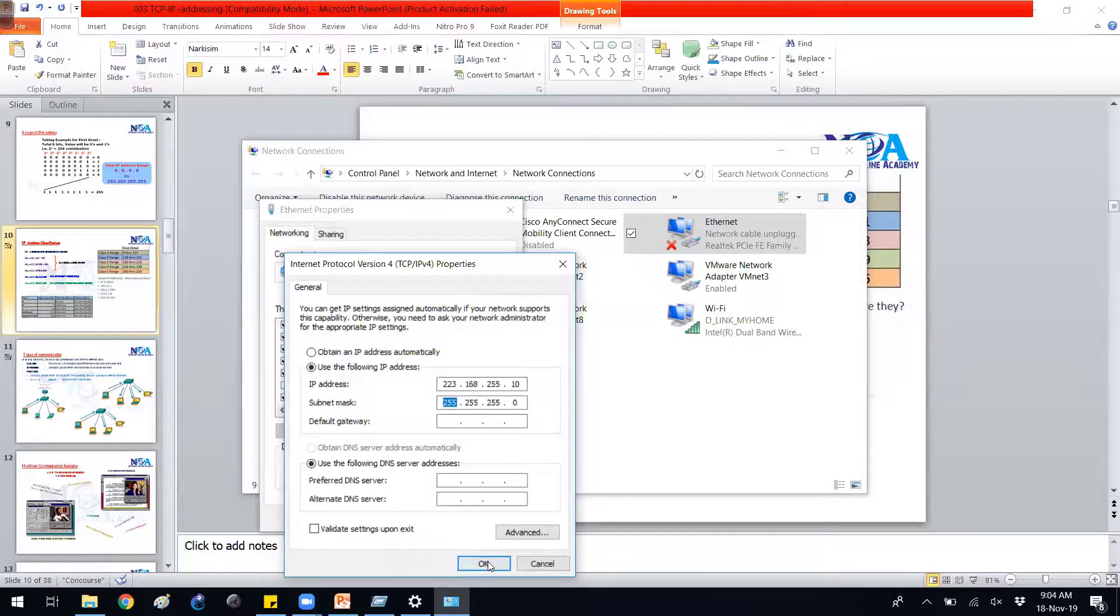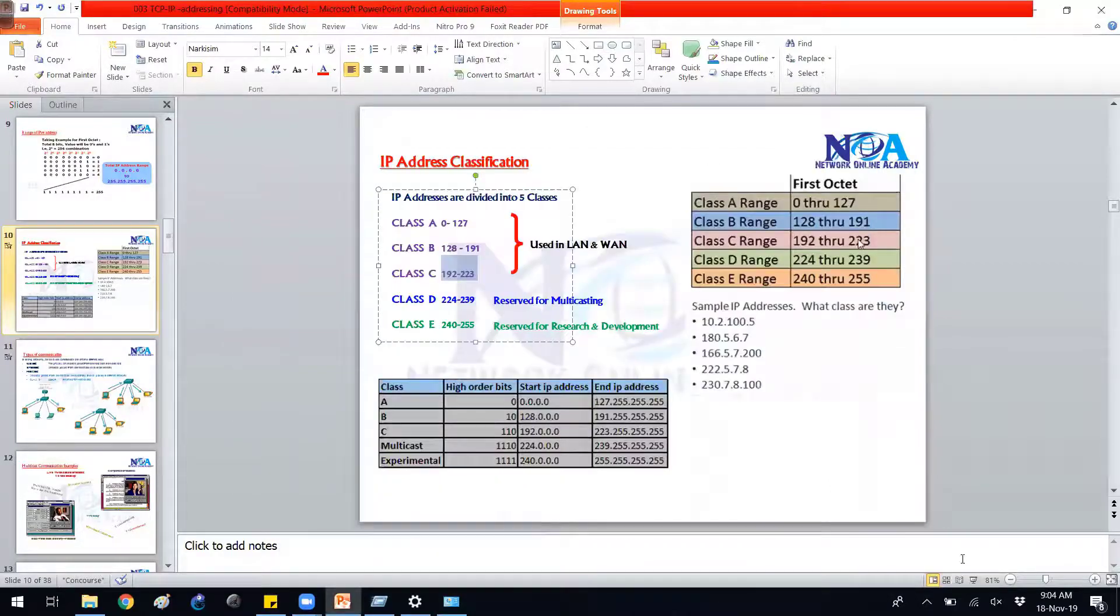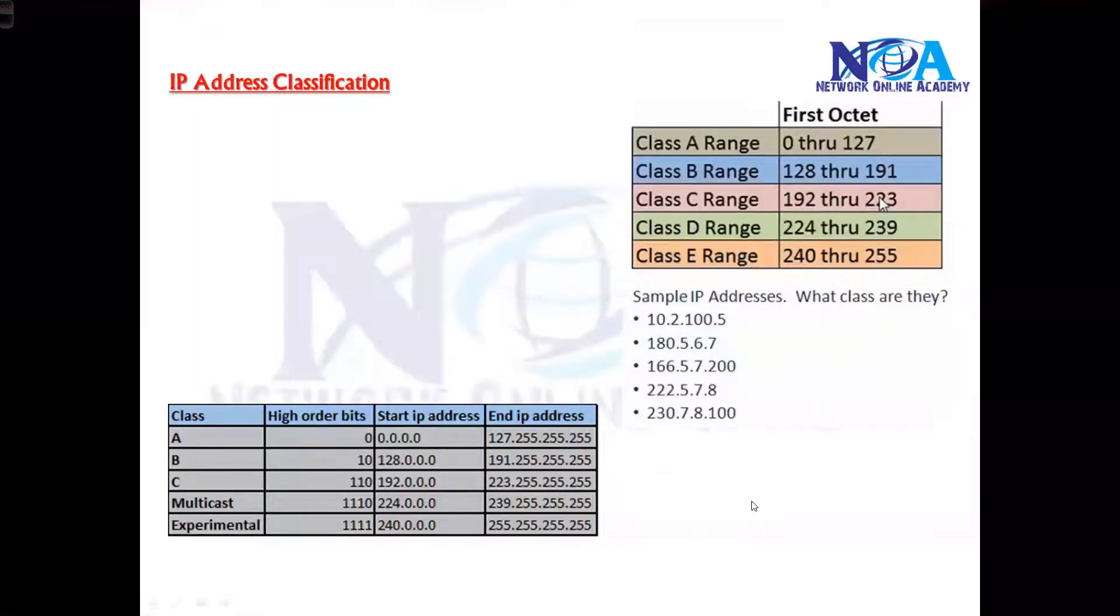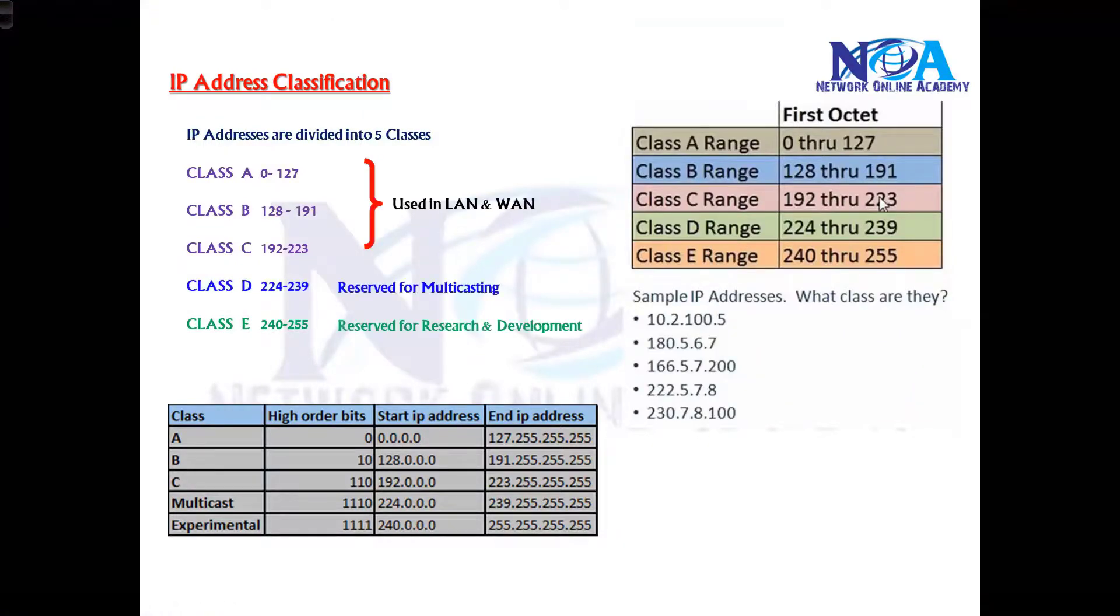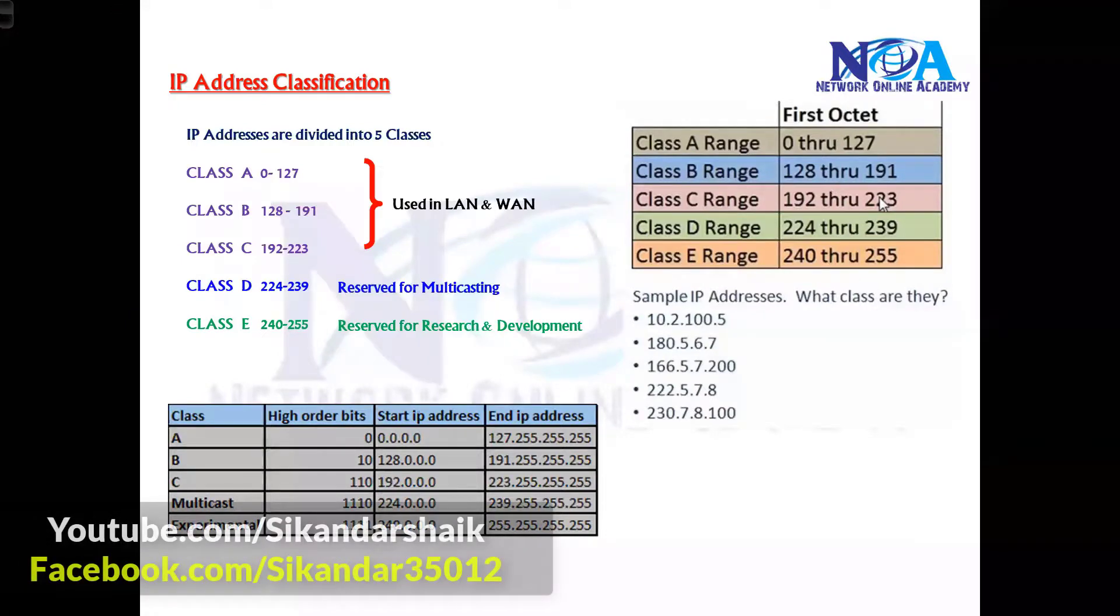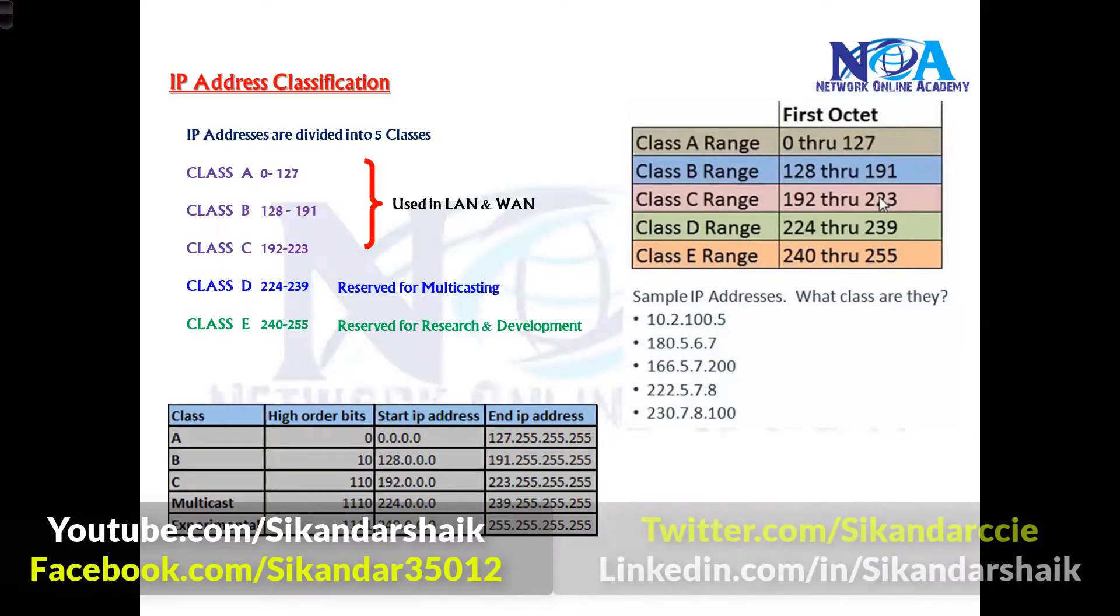But the remaining addresses you can use anything like here I can use 255, not a problem. Okay, so this device will accept here. But remember the first portion, because the range is divided or given based on the first portion only. So identify based on the first portion. So the ABC classes we use in normal LAN and WAN communications where we can assign to any device in the network. But whereas Class D or Class E addresses are reserved and we cannot use them in our normal networks.